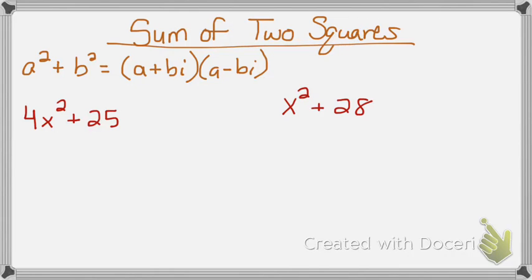Alright, the formula is a squared plus b squared equals a plus bi times a minus bi. And the reason why you have the i is because when you go back and FOIL you will get i squared which equals negative 1 and that's what will make that second value positive.